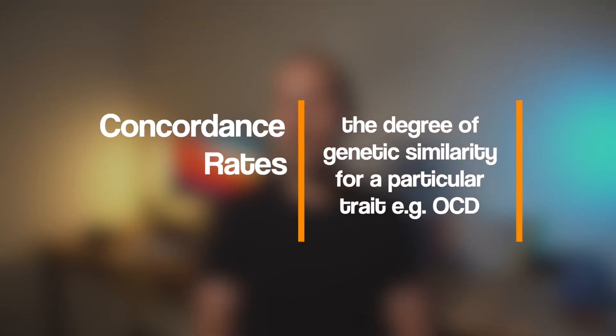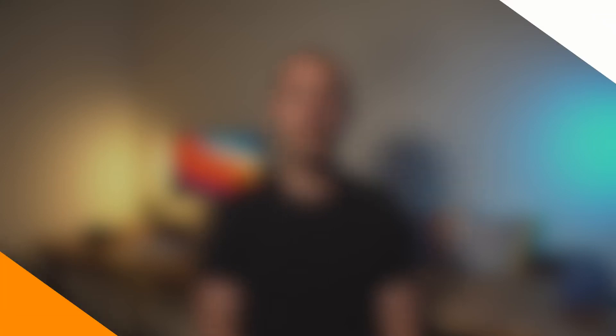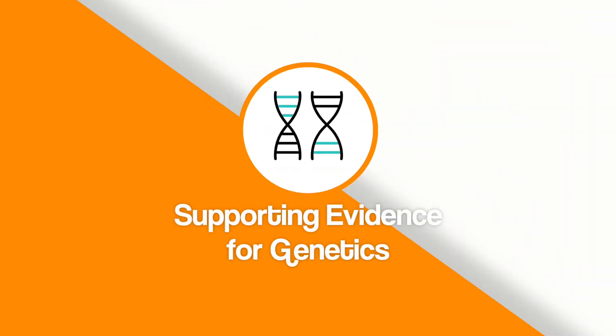In twin study research, concordance rates are compared. Concordance rates are the degree of genetic similarity for a particular trait, and the trait we're interested in is OCD. Supporting evidence for the role of genetics in OCD comes from twin study research by Nestadt et al. in 2010. In their review of OCD and the role of genetics, they showed that of all the twin study research published to date, the concordance rates in monozygotic twins were higher than dizygotic twins.